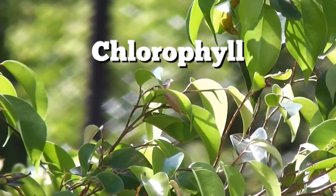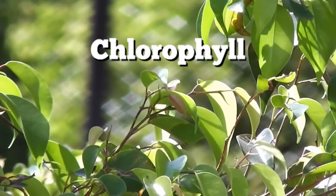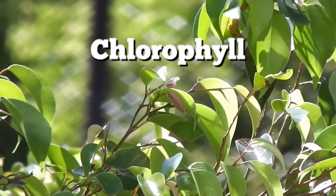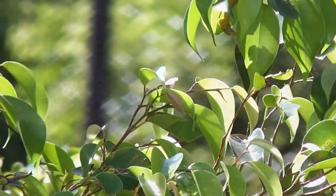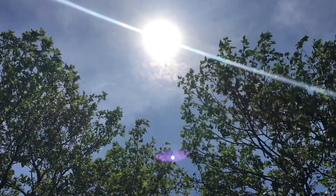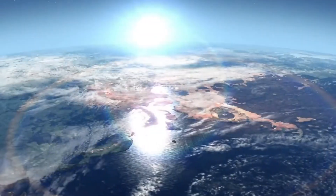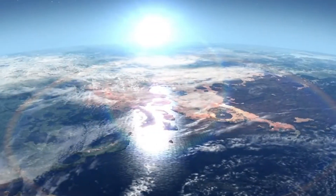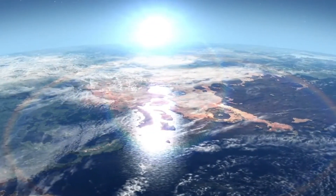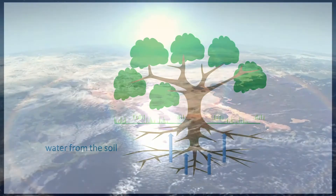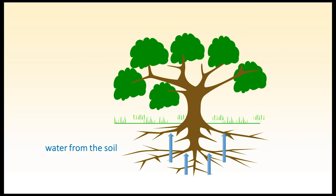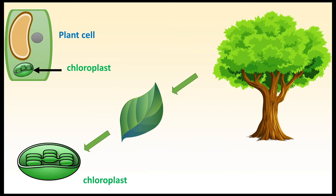The green pigments in plants called chlorophylls absorb energy from the sun's light rays. Plants gain carbon dioxide from the atmosphere and water from the soil as raw materials. This reaction happens inside the chloroplast in a plant cell.